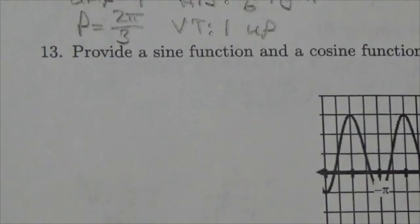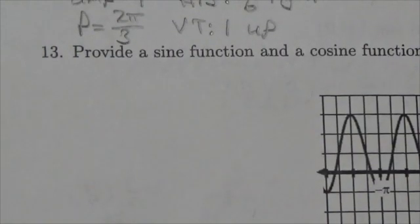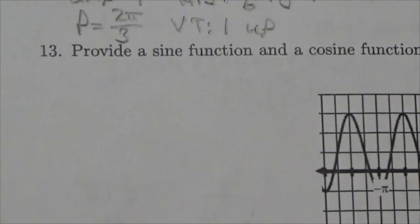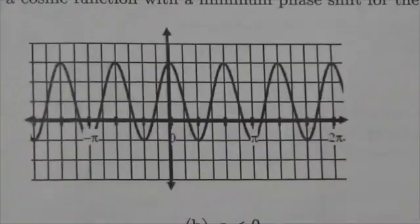Hi, everyone. This is the Math 30-1 Trig 2 review. This is question 13. We're going to do 13a here. It says, provide a sine function and a cosine function with a minimum phase shift for the following graph. Well, here's our graph.